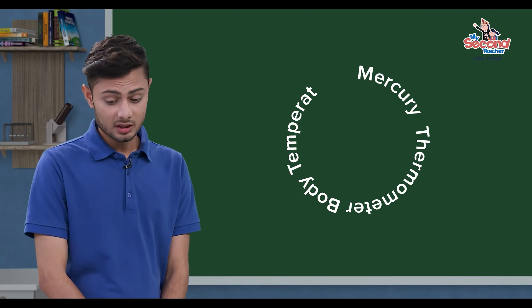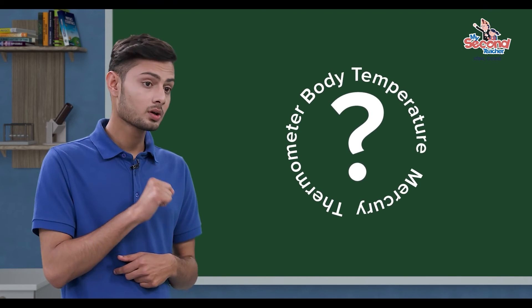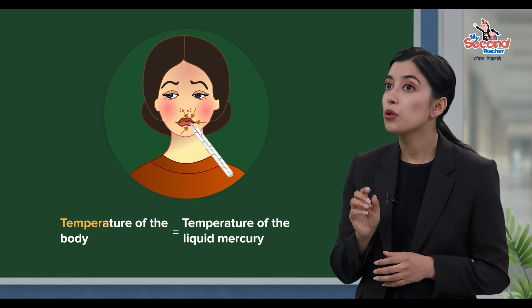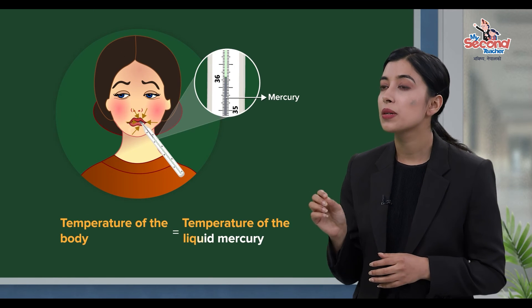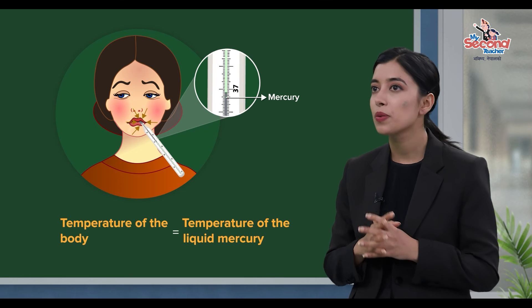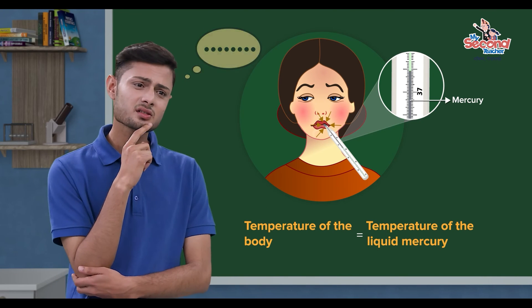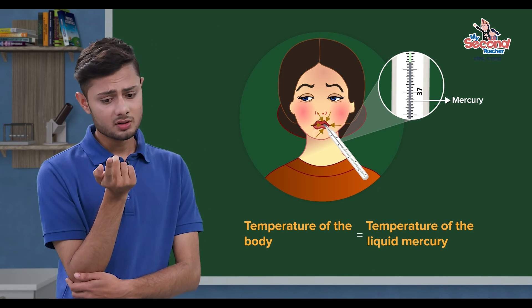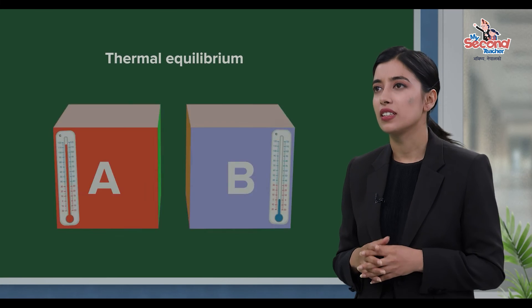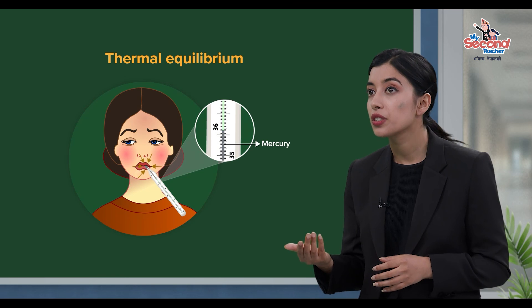There is a key point here — the temperature of our body is equal to the temperature of the mercury. That's right. Our body temperature equals the mercury temperature. This is thermal equilibrium — our body and the mercury reach the same temperature.